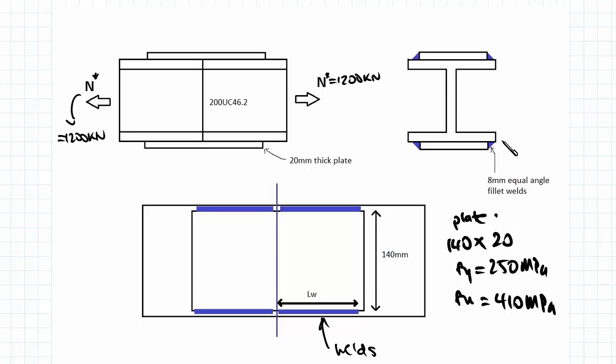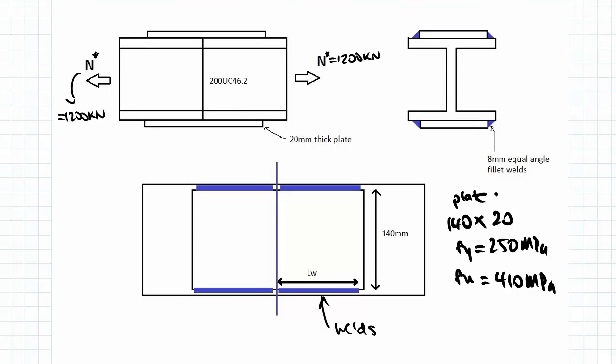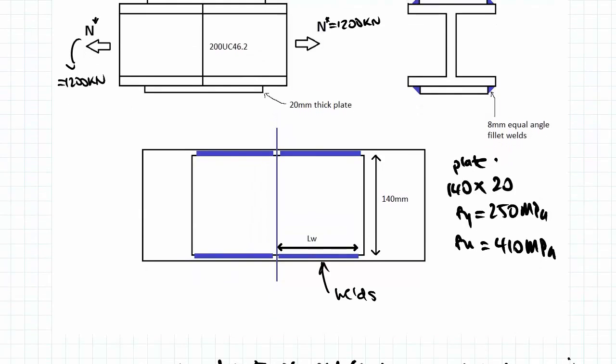The weld that we're using is an 8mm equal angle fillet weld. So remember, fillet welds are the triangular welds. And this is how it looks from the top. So we have four welds on the top and bottom plate.